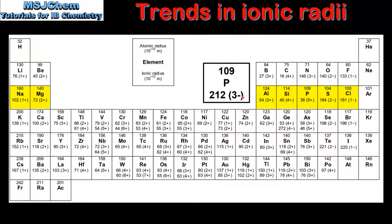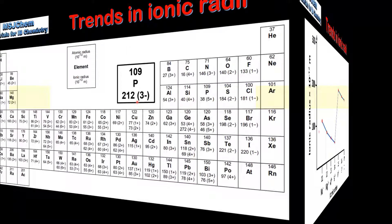Therefore for the rest of the video I'll be using the data for the P³⁻ ion. If we look at the ionic radii of the phosphide ion, the sulfide ion and the chloride ion we can see that it decreases from left to right.